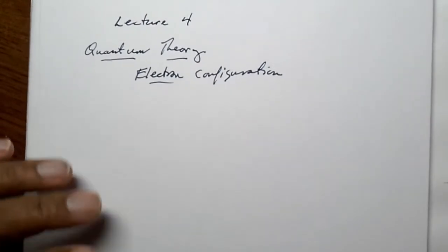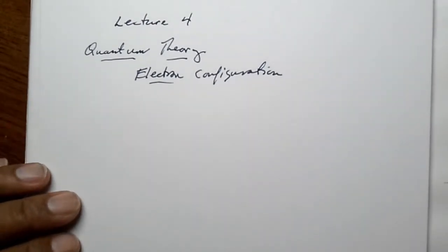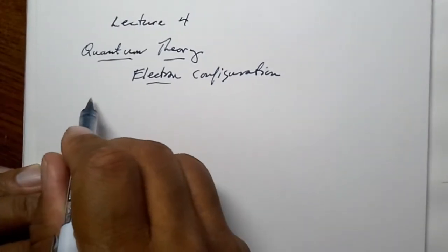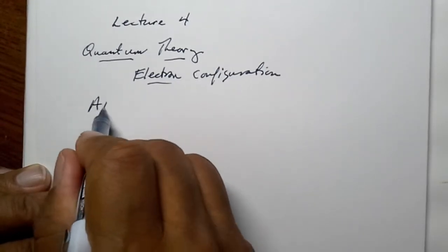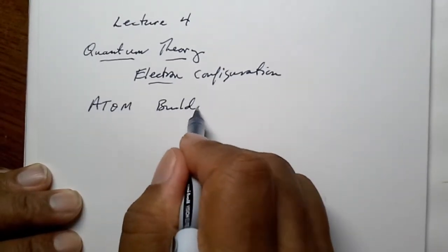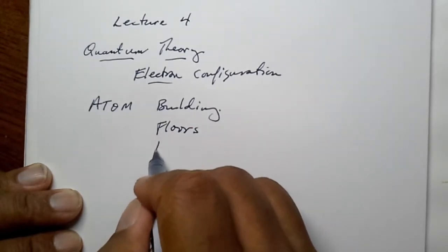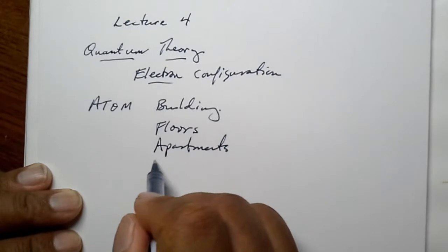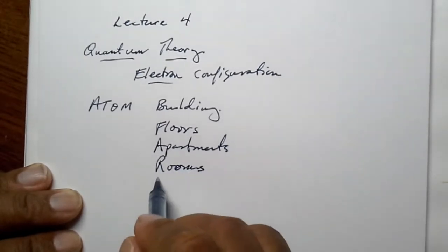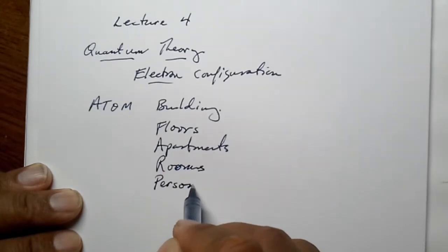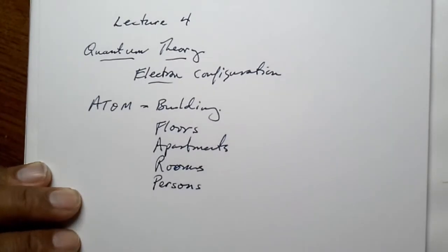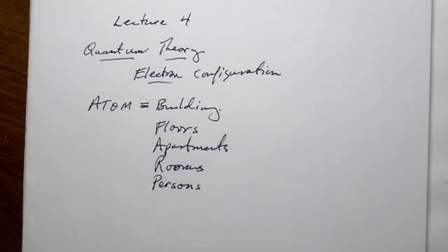This will be an introduction to electronic configuration. Normally I start by talking about the atom as a building — in that building we have floors, on the floors we have apartments, in those apartments we have rooms, and in the rooms we have people. For the sake of time, I'm not going to use that analogy. I'm going to explain the concepts and simply compare.